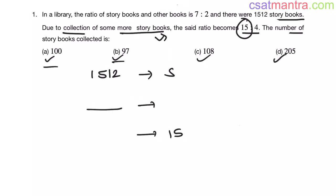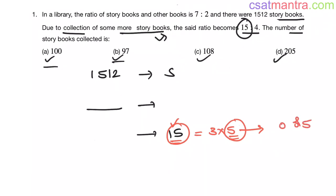Now, 15 can be written as 3 × 5. So when a number is a multiple of 15, it should also be a multiple of 5. Rather than checking for a multiple of 15, we are checking for a multiple of 5, which makes the problem simpler. When a number is a multiple of 5, its last digit should be either 0 or 5. So let's add these options to 1512 and see which option gives us a last digit of 0 or 5. To find the last digit, we only add the last digit of 1512 (which is 2) to the last digit of each option.